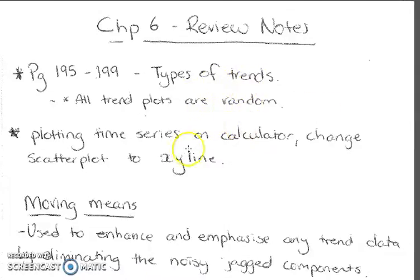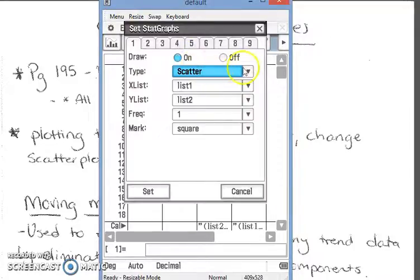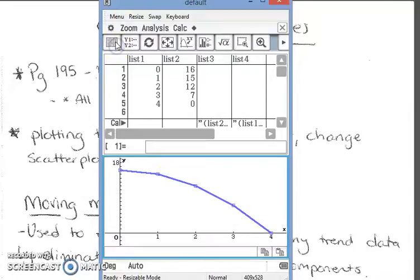We can plot time series on our calculator by changing the scatter plot to the XY line. Instead of scatter, we have XY line, which joins all our dots together in a line so you're able to see trends and information.